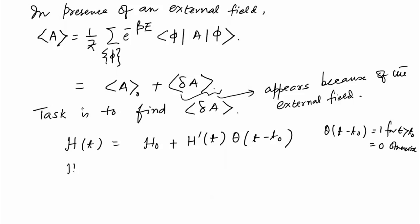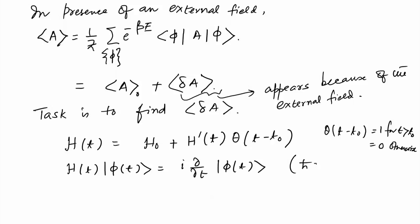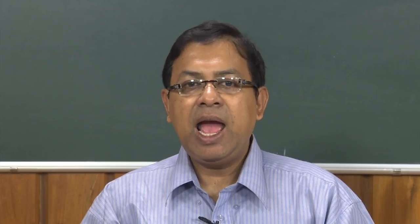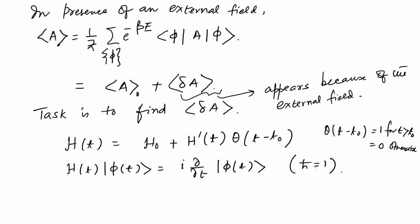This Hamiltonian H satisfies the Schrödinger equation iℏ ∂/∂t |φ(t)⟩ = H|φ(t)⟩, where we have taken ℏ = 1. The problem is clear: the thermal average of observable A can be written as ⟨A⟩₀ + δA in the linear response regime, and we need to find δA. H₀ is the field-independent part and H′(t) is the perturbation from the external field.